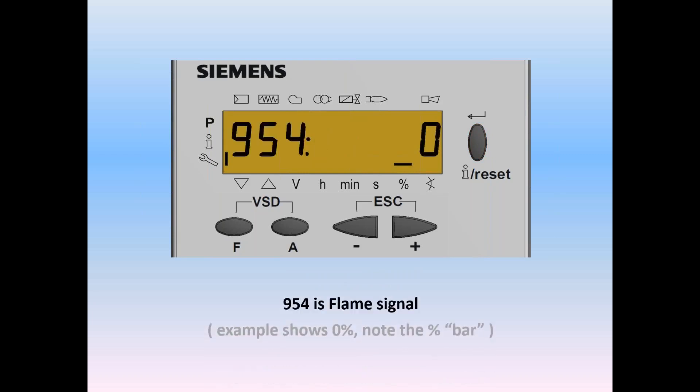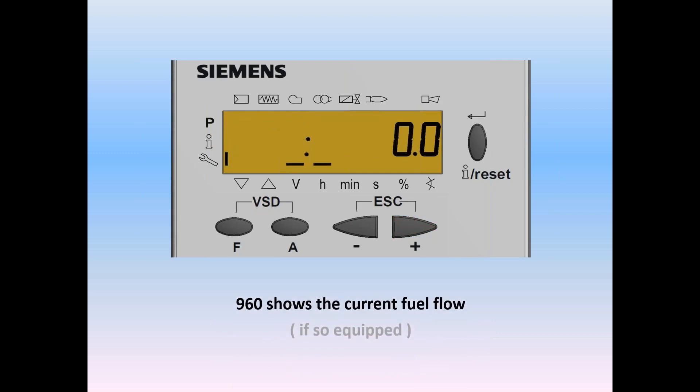First thing you'll see on your screen is 954 flashing. You'll notice that on the left, the little wrench has a bar indicating that we're at the service level. The parameter is 954, and the value is zero. And you'll notice that there's a bar above the percent sign, which is telling us that we're getting a zero percent flame signal. That's because the burner shut down. If you push the plus key, we can move it on. And now we get parameter 960. 960 shows us the current fuel flow. In this case, it's zero.